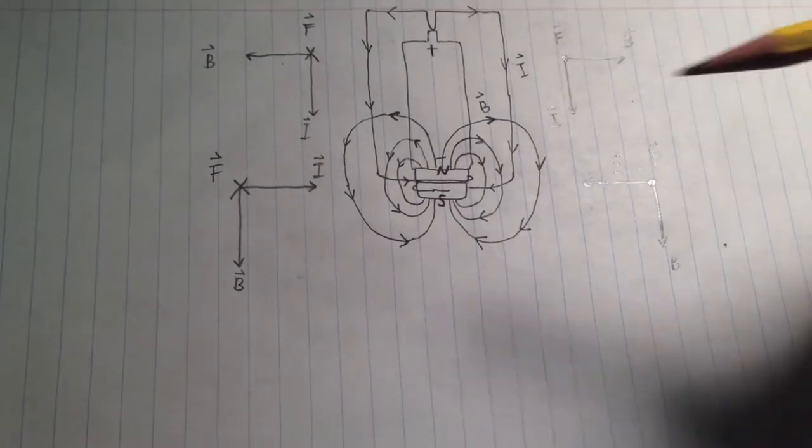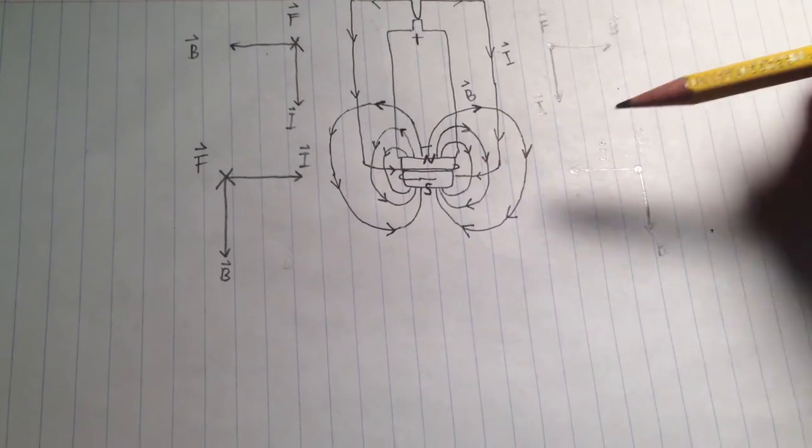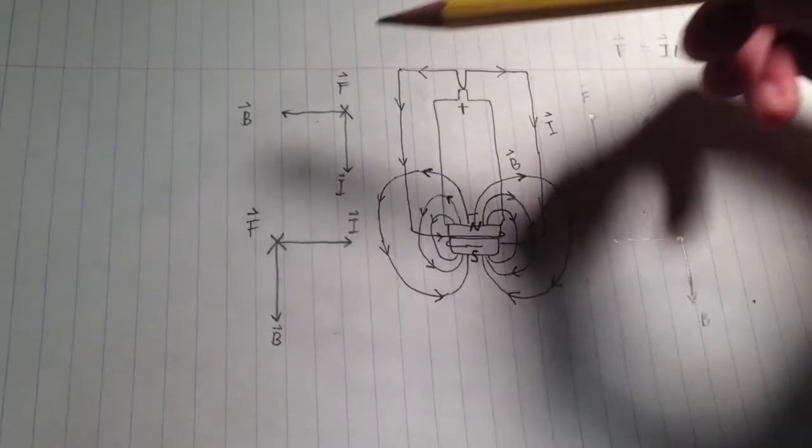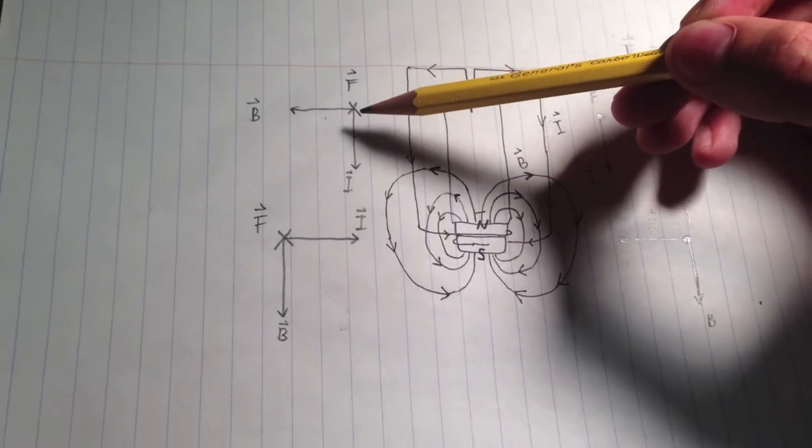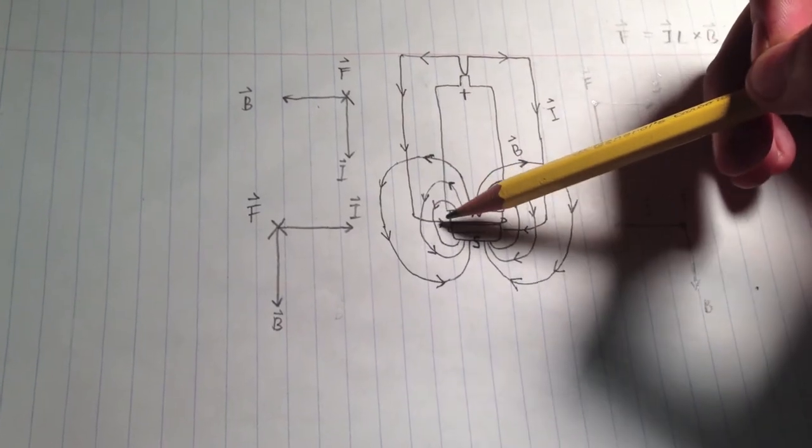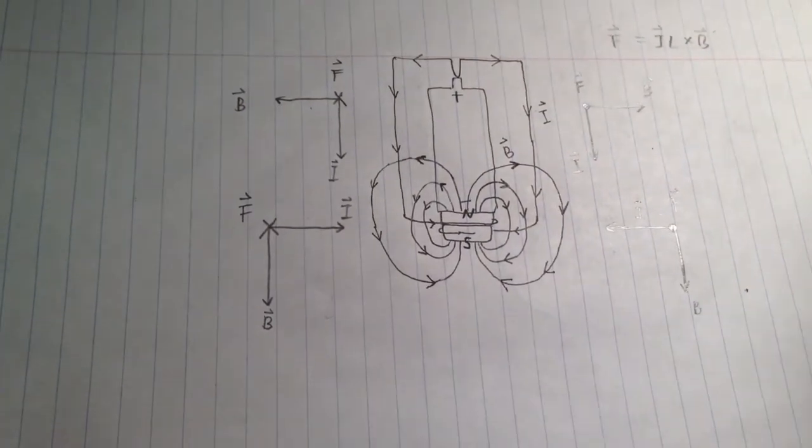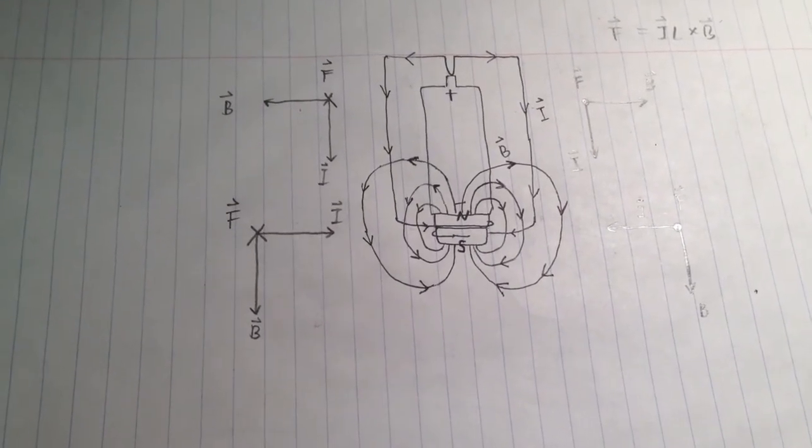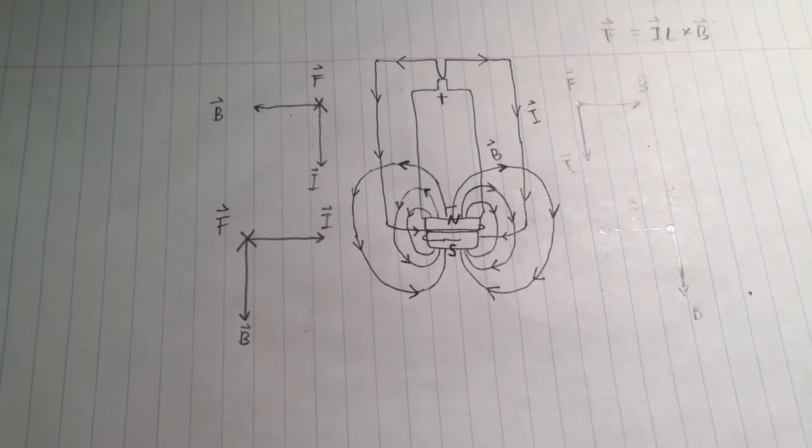For this part of the wire, the force is also coming out of the page. For the left side, the force is going into the page, and so does this part of the wire. So there's a net torque acting on the wire to drive it to spin in clockwise direction.